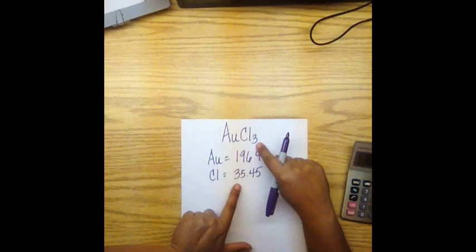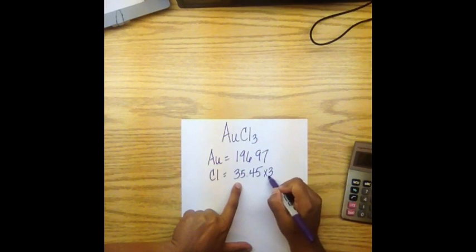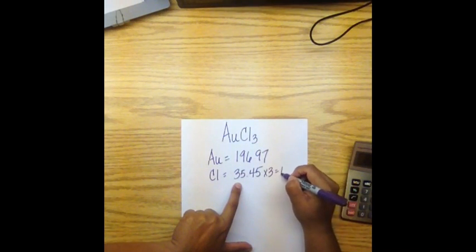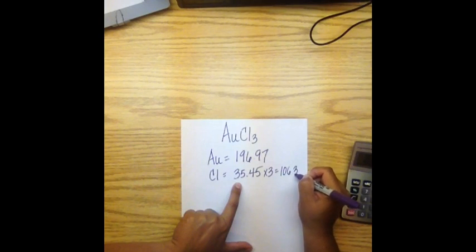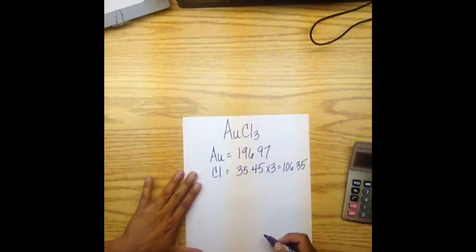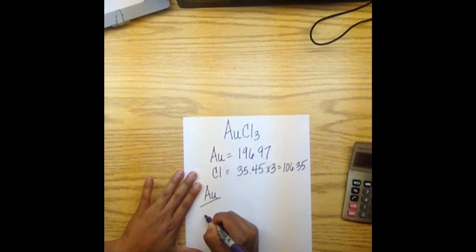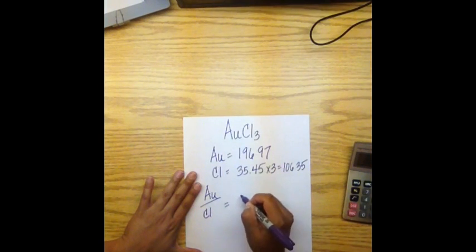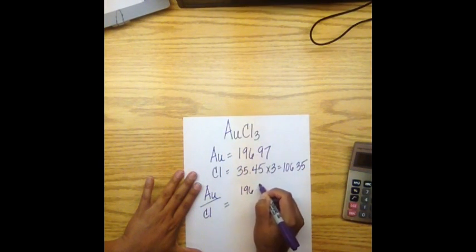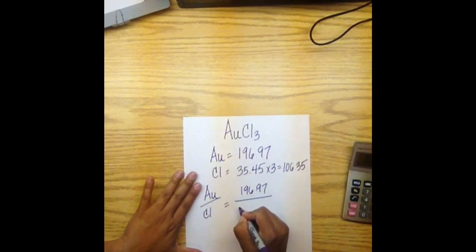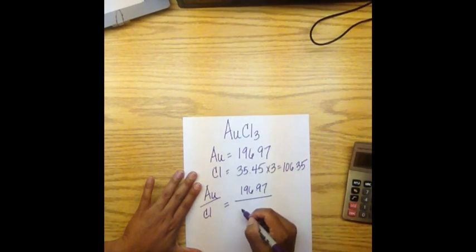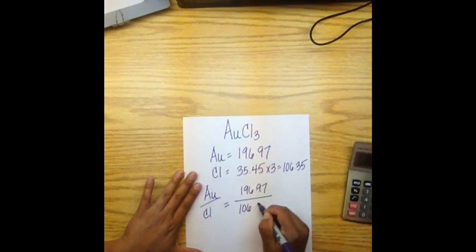Just like in part A, we have to account for the three atoms of chlorine in the formula, so we multiply the mass by 3 to get 106.35. To calculate the ratio of gold to chlorine, divide the total mass of gold, 196.97, by the total mass of chlorine, which is 106.35.